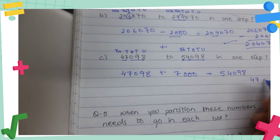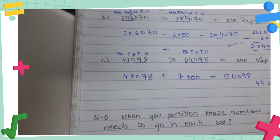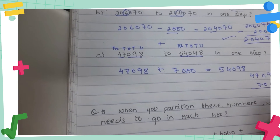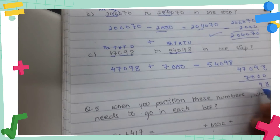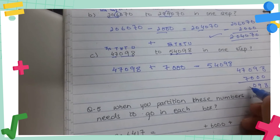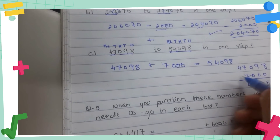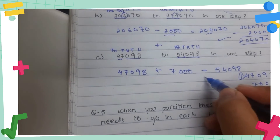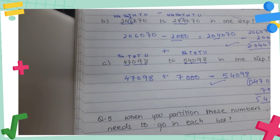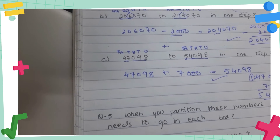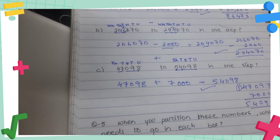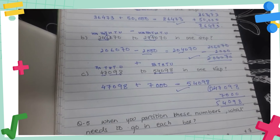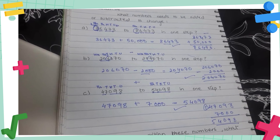Adding 7,000 to 47098: 8 stays, 9 stays, 0 stays, then 7 plus 7 is 14 — write 4, carry 1 — giving 5. The result is 54098, which is the correct answer. You can verify with a calculator as well. If you have any questions, just let me know in the comments, and we will move on to the next question.